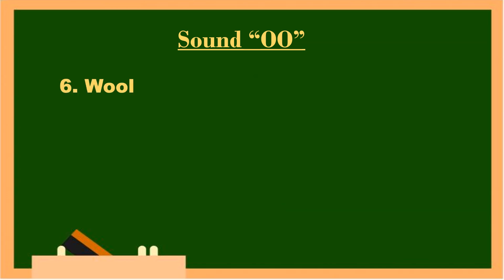Number six: W-double-O-L, wool. W-double-O-L, wool. Number seven: S-P-double-O-N, spoon. S-P-double-O-N, spoon. Number eight: R-double-O-M, room. R-double-O-M, room.